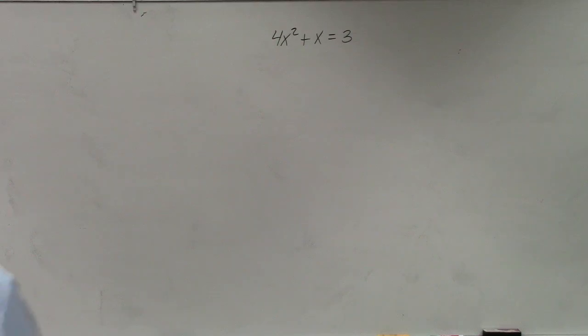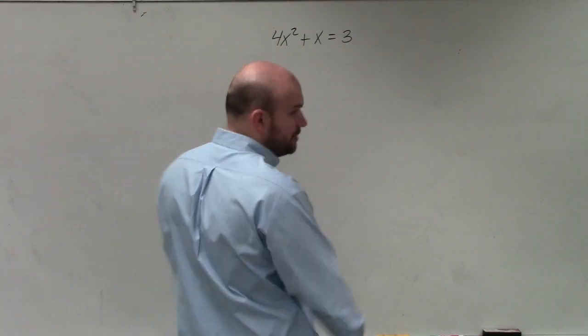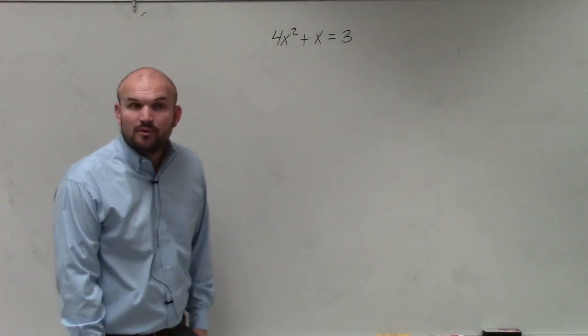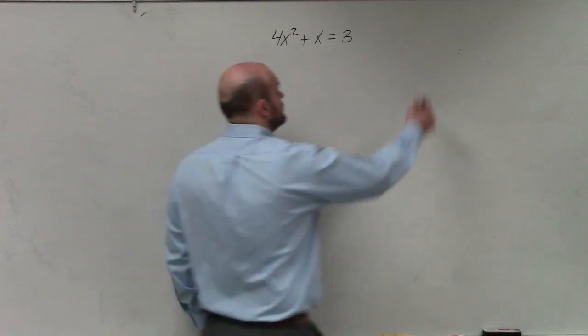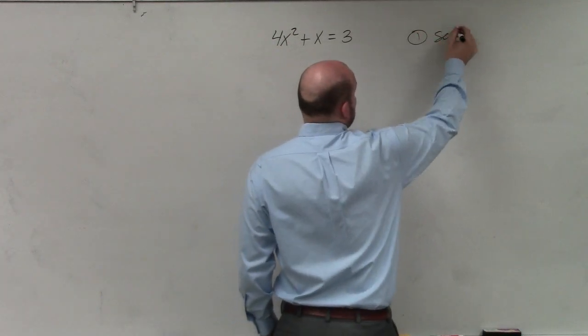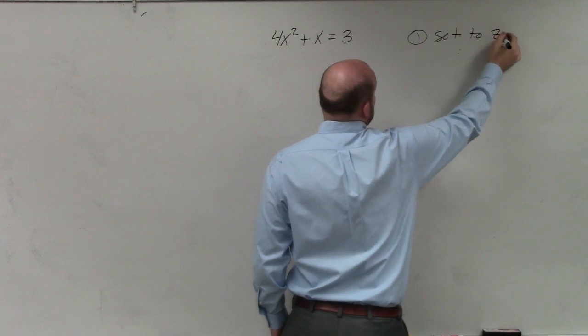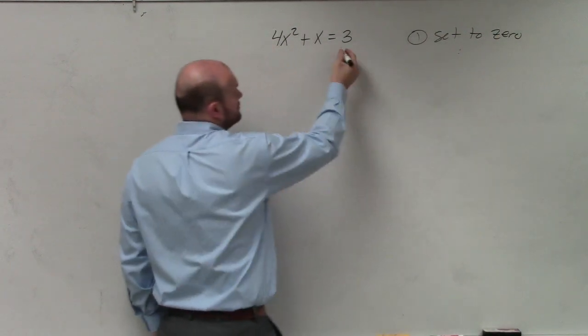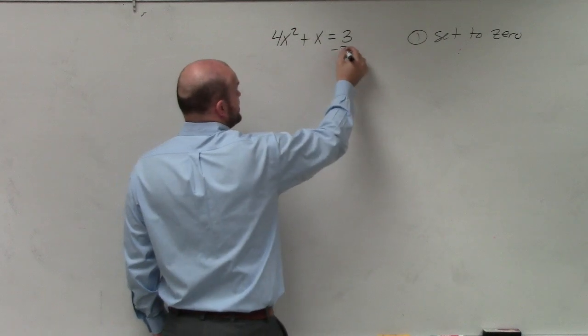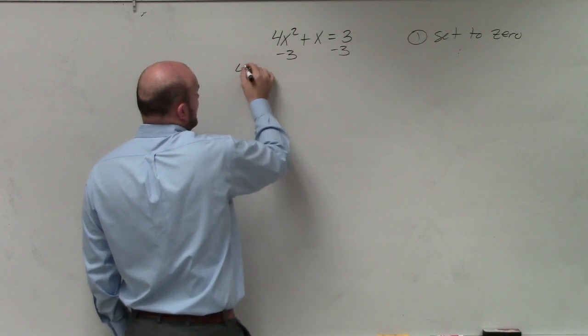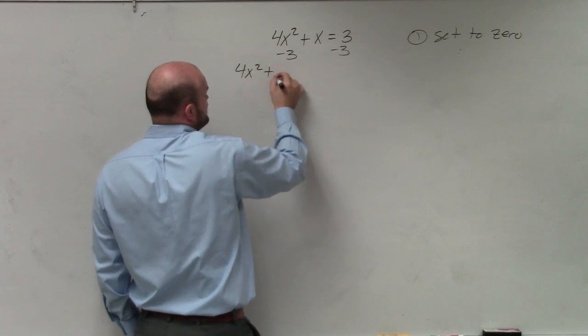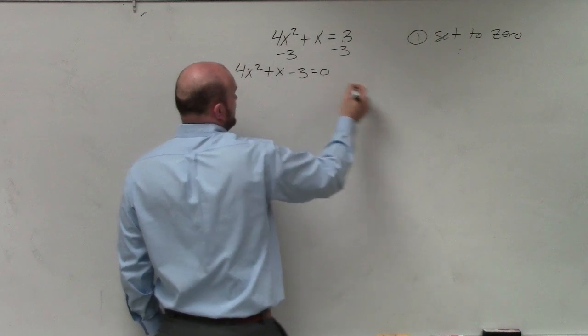All right, so if you guys are going to follow some steps on completing quadratic formula, step number one would be to make sure you set to zero. So this is not set equal to zero, so I subtract 3 on both sides. I get 4x squared plus x minus 3 equals 0.